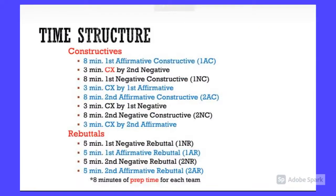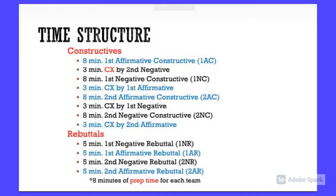This is the structure of a CX debate — what each round looks like. It always starts off with the affirmative team, the team that's going to be arguing that yes, this should happen. They have what are called constructive speeches, which is really where you're laying out your argument — building your case, giving sources, making claims.